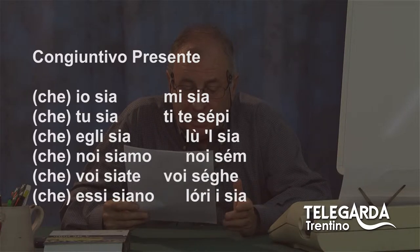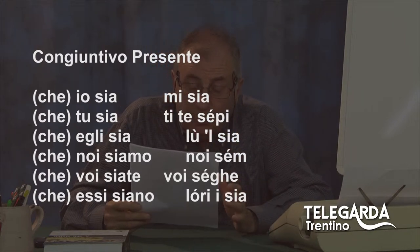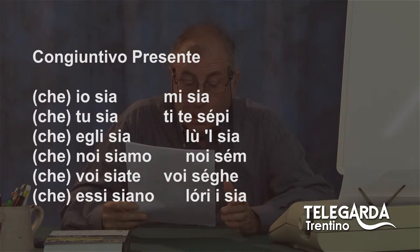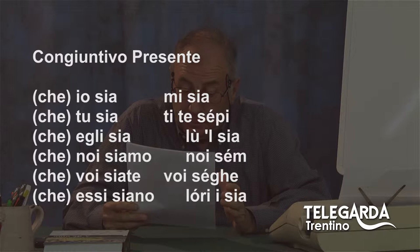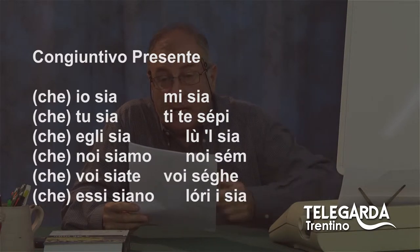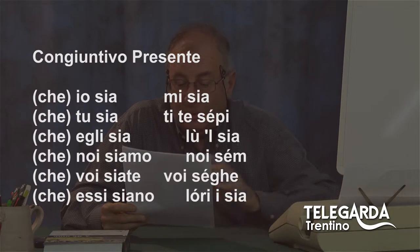In dialetto come diventa? Che mi sia. Attenzione a questa forma: che ti te sepi, forma stranissima, però i nostri vecchi dicevano così: ti te sepi, con la e chiusa. I dici che l'ul sia. I dici che noi sem. I dici che voi seghe, non le seghe del falegname mi raccomando, ma è questa forma verbale: voi seghe con la e chiusa. I dici che l'ori i sia. Queste due forme, 'che ti te sepi' e 'che voi seghe', faranno venire anche da ridere, ma questo è il dialetto locale.